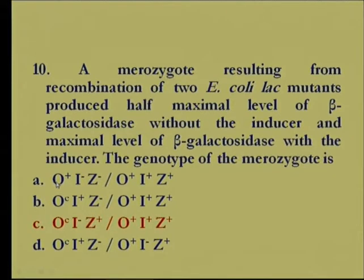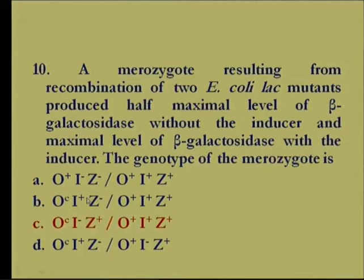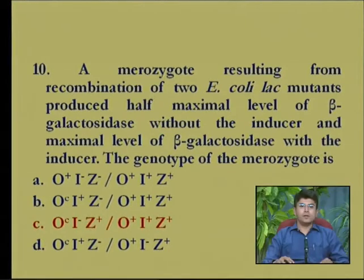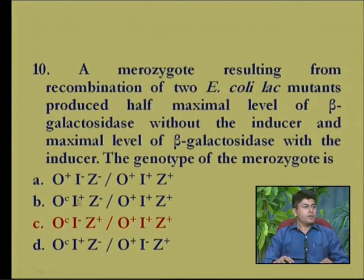The first option has o⁺ i⁻ z⁻ on one DNA molecule and on the bacterial chromosome the operator, repressor gene, and lac z gene are all wild type. In this case, maximum level of expression will not be seen. The second option has an oc mutation, i⁺, and z⁻ on one DNA molecule, whereas on the bacterial chromosome the operator, lac repressor, and beta-galactosidase gene are all wild type. Here also, maximum level of beta-galactosidase expression will not occur.